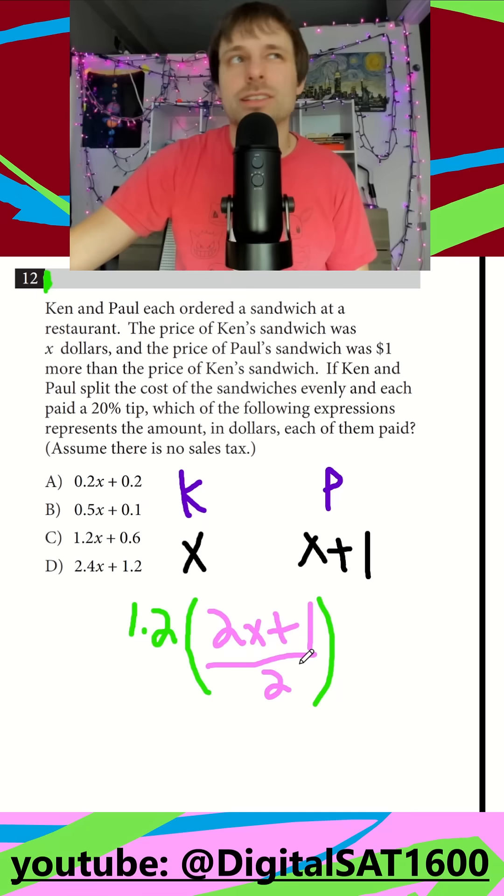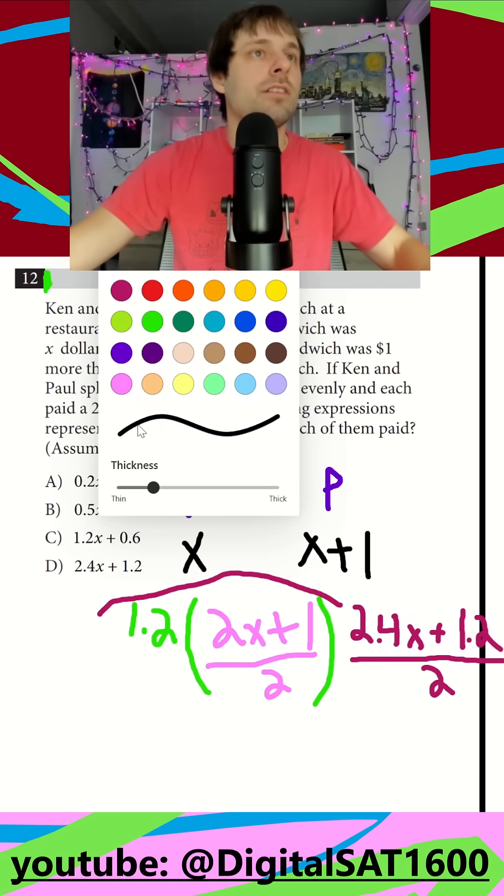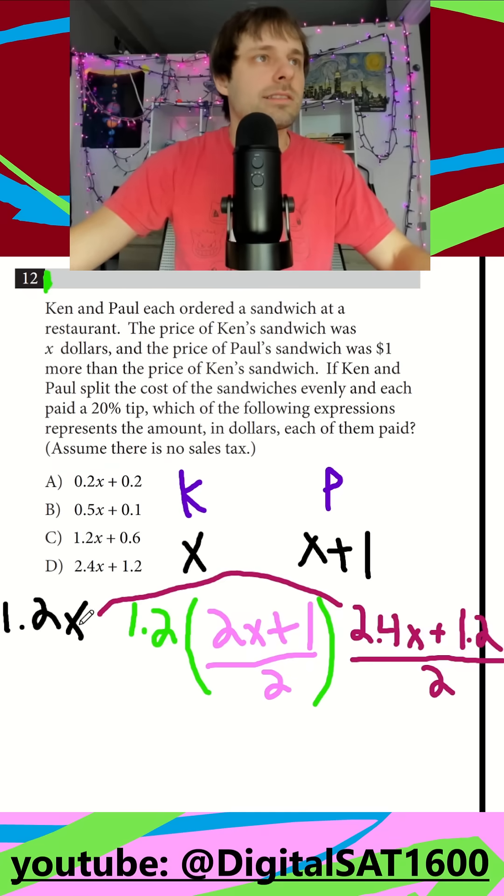They want to know how much each of them are paying, so I could just do the top real quick. I should get 2.4x plus 1.2 because it doesn't matter if you multiply or divide first. I think multiplying is easier. Then I divide this by 2 and I should get my final answer of 1.2x plus 0.6. It looks like we're going to be leaning towards C here.